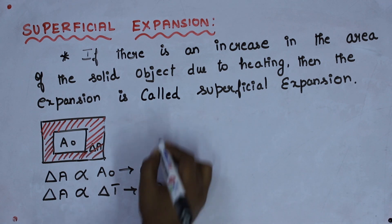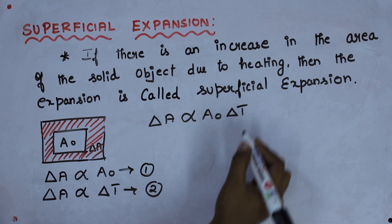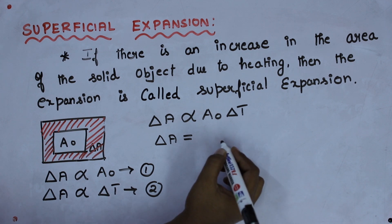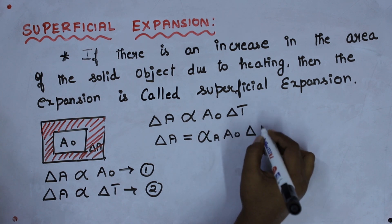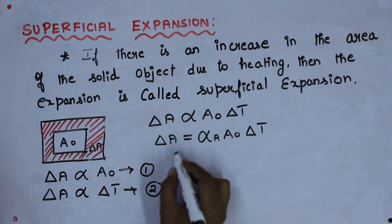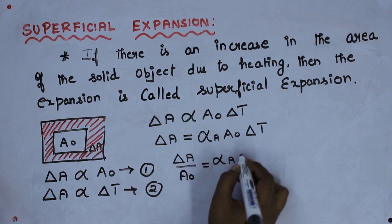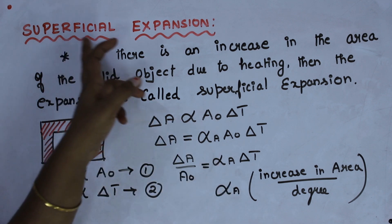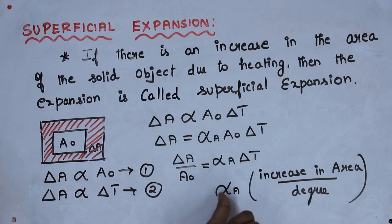Combining both equations, delta A is proportional to both original area and change in temperature. To remove proportionality, we include a constant — here, I am taking alpha A as a constant. So, delta A divided by A₀ is equal to alpha A times delta T. Alpha A is the coefficient of superficial expansion. The coefficient of superficial expansion is the increase in area per degree rise in temperature.